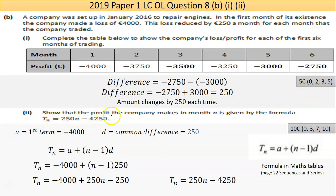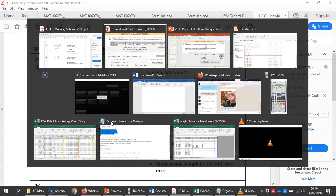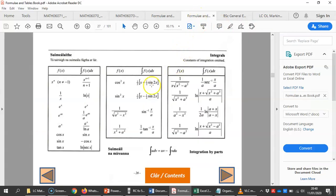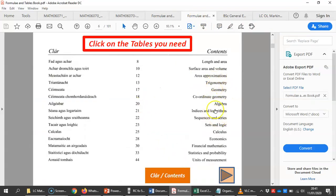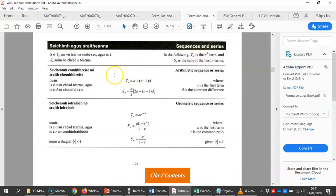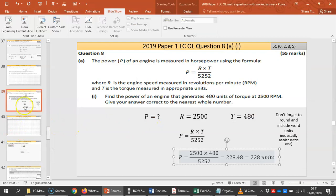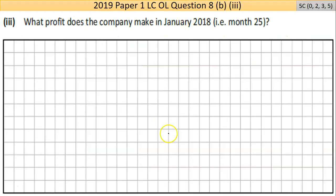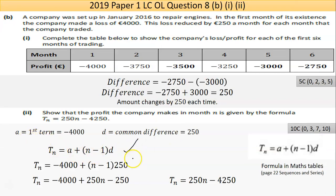Now part two says, show that the profit the company makes in month n is given by the formula T_n equals 250 times n minus 4,250. So that should be a hint, that is the section on sequences and series. I should have my math tables still open. I'm looking here at this formula, that's the formula they're talking about.